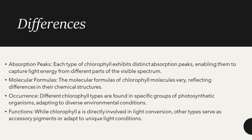Let us discuss the differences between all chlorophyll types. Absorption: each type of chlorophyll exhibits distinct absorption peaks, enabling them to capture light energy from different parts of the visible spectrum. Molecular formulas: the molecular formulas of chlorophyll molecules vary, reflecting differences in their chemical structures. Different chlorophyll types are found in specific groups of photosynthetic organisms, adapting to diverse environmental conditions.